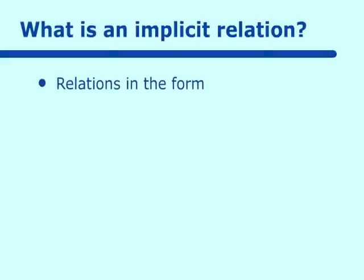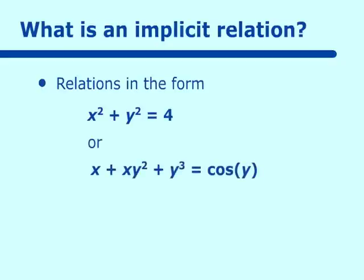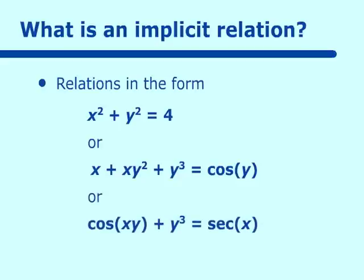We could have relations in the form of x squared plus y squared equals 4, which you know to be the circle. Or x plus xy squared plus y cubed equals cosine y. As you can see, it would be very difficult — maybe even impossible — to solve for y in this particular relation. Or we could have cosine xy plus y cubed equals secant x, and again it would be just about impossible to solve for y.